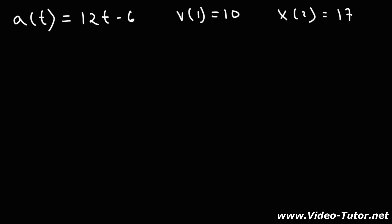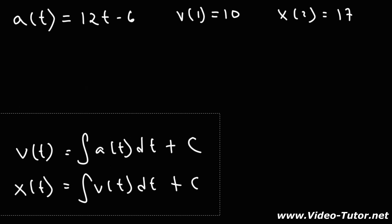Well, here's some things you want to know. You could find the velocity function by integrating the acceleration function, and of course you need to take into account the constant c. You could find the position function by integrating the velocity function. So that's how we could find these two functions by integration.